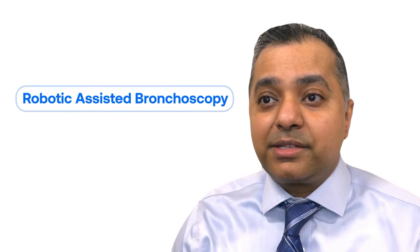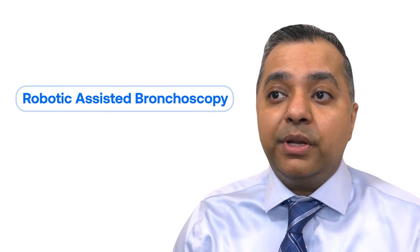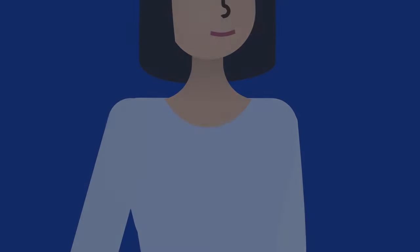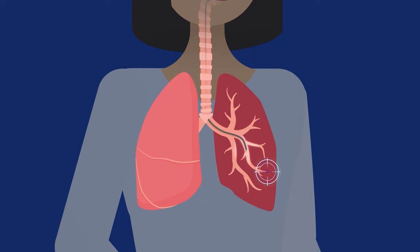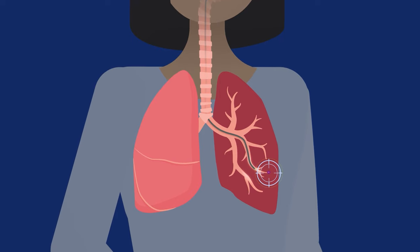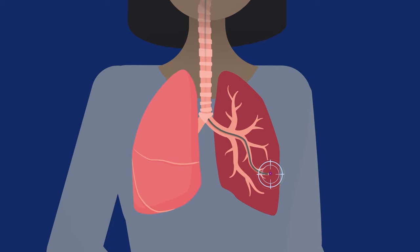Robotic assisted bronchoscopy is an endoluminal platform. That means it goes through a lumen like bronchial tubes in this setting designed to access lung nodules in the perimeter of the lung.